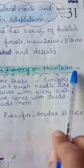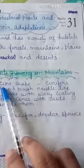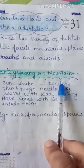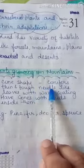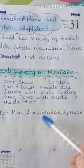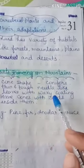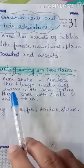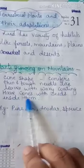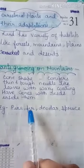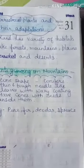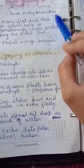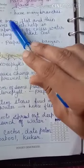Plants growing on mountains are cone-shaped and are hence called conifers. They have needle-like leaves with a waxy coating, which helps in evaporation of excess water and keeps the plant cool.